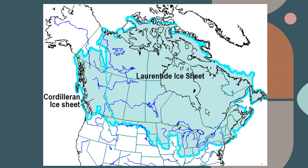Glacial Lake Agassiz was formed by the advance and retreat of the Laurentide Ice Sheet — a massive ice sheet that covered much of the northern part of North America and was about two and a half miles, or four kilometers, thick. The Laurentide Ice Sheet began advancing around 2.5 million years ago and started its final retreat around 11,000 years ago. As this ice moved across the landscape, advancing and retreating, it carved much of the landscape that we know today, including the Great Lakes.